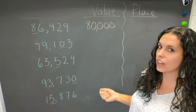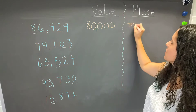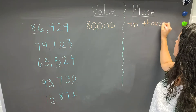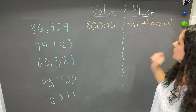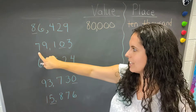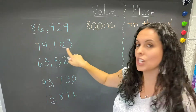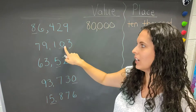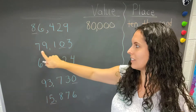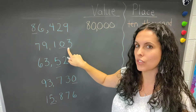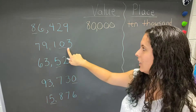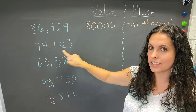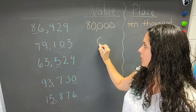So place is your place value — the eight is in the ten-thousands place. Our next number is read 79,103. Notice we don't have any tens, and there's a zero there. So when we read it, we read 79,103 — no 'and' there. The value of the underlined digit is zero, because there is no number there. Our value is zero.